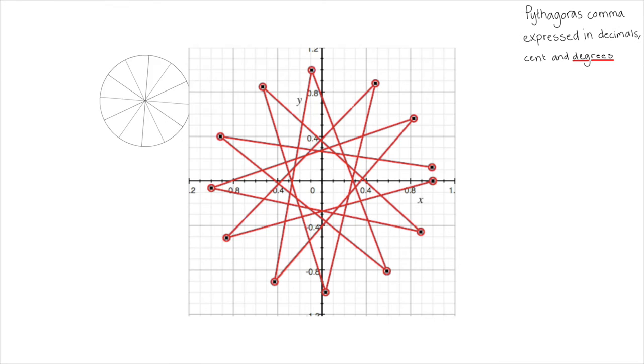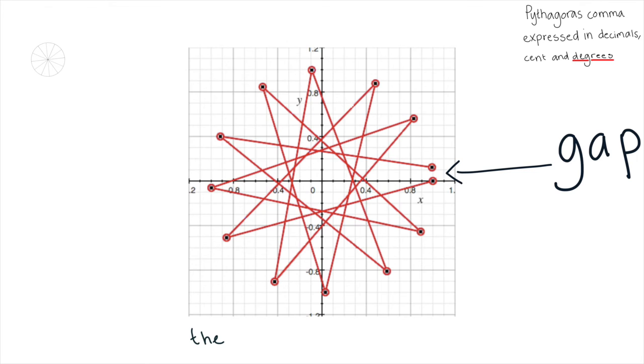The Pythagorean comma causes a 12 pointed star to fail to close. And the 12 pointed star represents the Pythagorean scale. And each line in 12 pointed star represents a just perfect fifth. And that small gap here has a central angle of 7.038 degrees.